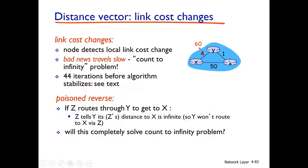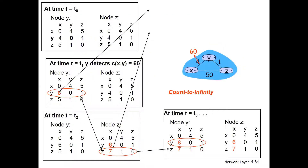That means Z tells Y that Z's cost to reach X is infinite. This is the initialization at time T0 for Y and Z. This is the initialization of X, Y, and Z.